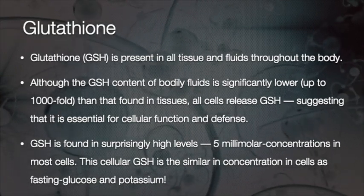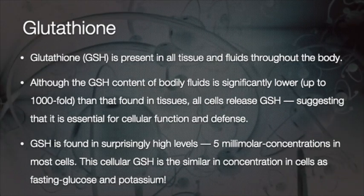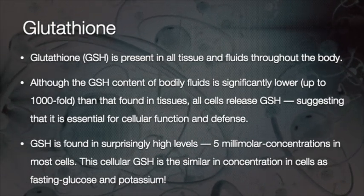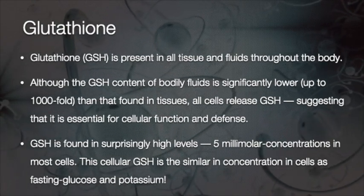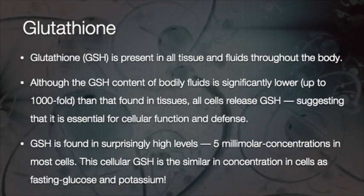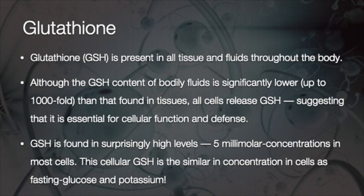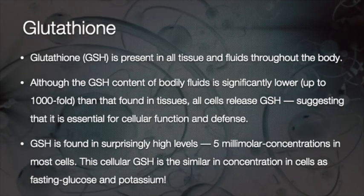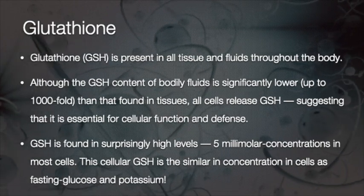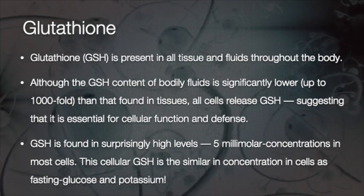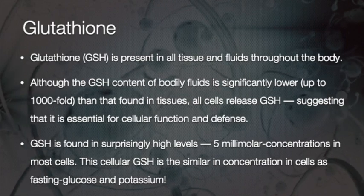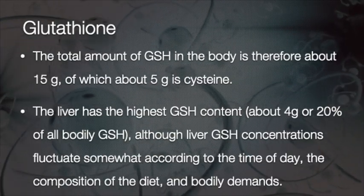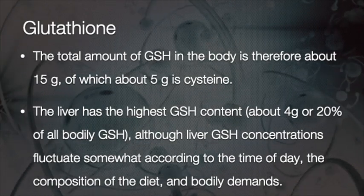Glutathione is a very fascinating molecule. It is present in all tissues and fluids throughout the body. Although the glutathione content of bodily fluids is significantly lower — up to a thousand-fold lower than those found in tissue — all cells release glutathione, suggesting that it is essential for cellular function as well as for defense. Glutathione is found in surprisingly high levels, about 5 millimolar in concentration, in most cells.